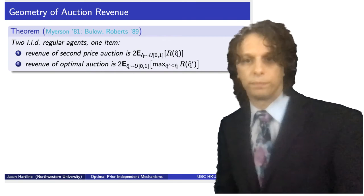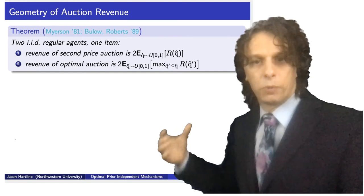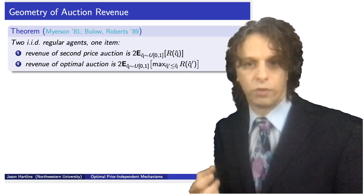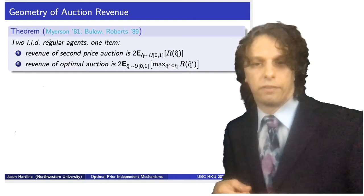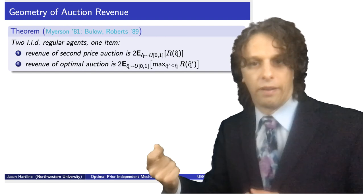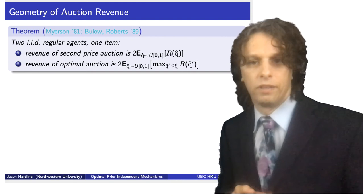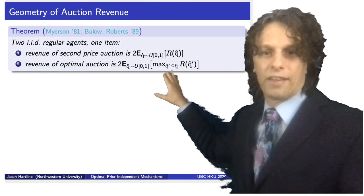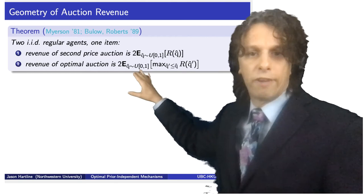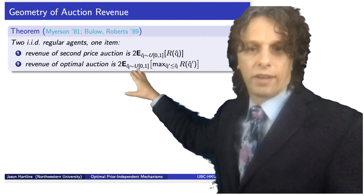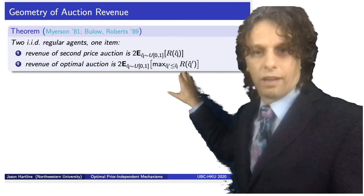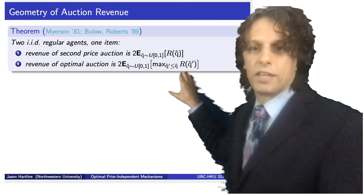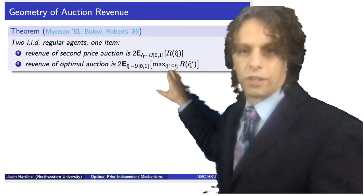What about the optimal auction? The difference from the second price auction is the reserve price. From agent one's perspective, they're offered either the other agent's value or the reserve price — whichever is higher. The reserve price corresponds to the quantile maximizing the revenue curve. Equivalently, the price agent one faces is the maximum of the revenue curve value at a uniformly drawn quantile Q2 and the revenue-maximizing point. With two agents, revenue is twice that.